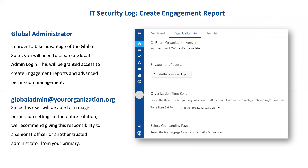The global admin also has the ability to generate those engagement and usage reports we mentioned earlier. They can generate those for a given timeframe and print them out as an Excel file to be dug into from there. We do recommend that because of the knowledge required to really interpret that information, the global admin should probably be someone in a senior IT role in your organization, or another senior trusted administrator.